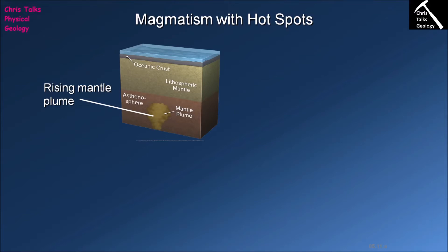So obviously we have a bit of a problem. We know that a lot of magma is produced at divergent plate boundaries and at convergent plate boundaries, but in the case of Hawaii it's miles away from any obvious source of magma, so clearly we have to explain what's going on. Another example would be the island of Iceland.